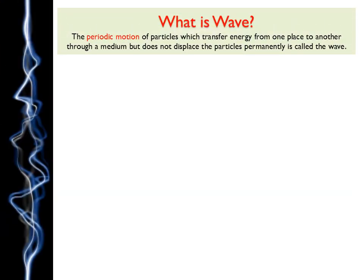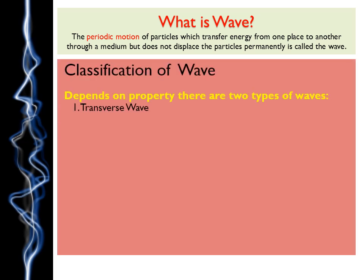We are going to start this chapter with an important definition. The first definition is: what is a wave? The periodic motion of particles which transfers energy from one place to another through a medium but does not displace the particles permanently is called a wave. In a gist, a wave is nothing but a carrier or a medium by which we can transfer energy, like light energy or sound energy.